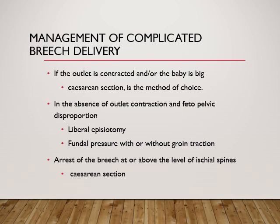In management of complicated breech delivery: if the outlet is contracted or the baby is big, we opt for caesarean section. In the absence of outlet contraction or fetopelvic disproportion, we prefer liberal episiotomy and fundal pressure with or without groin traction. If there is arrest of the breech at or above the level of the ischial spine, caesarean section is preferred.